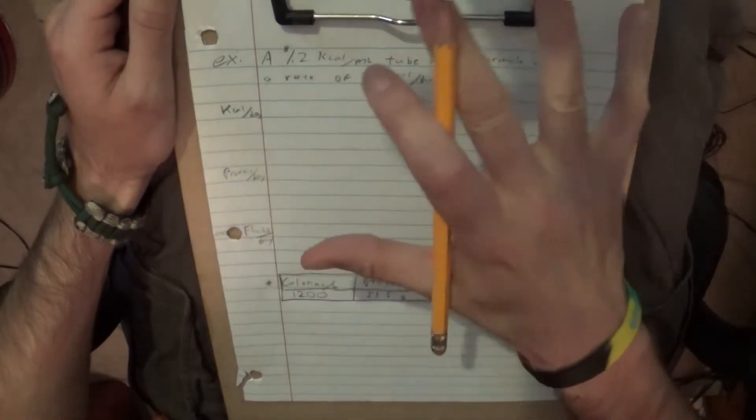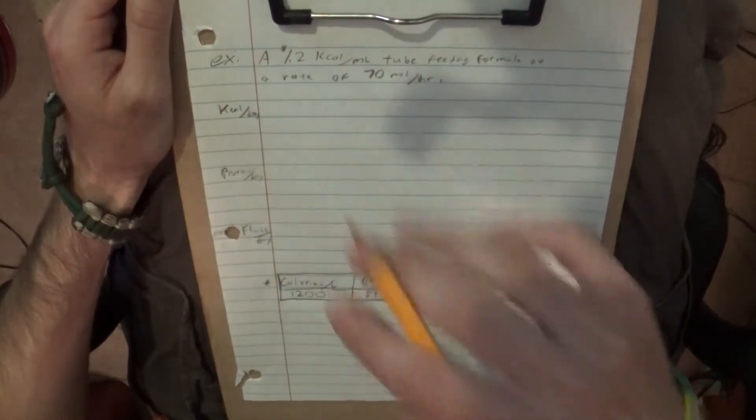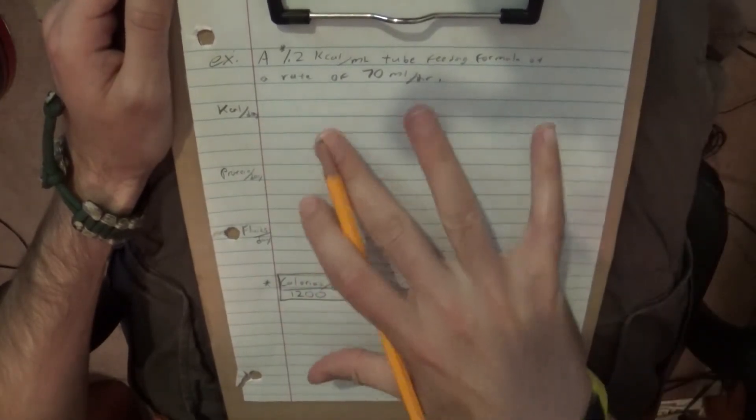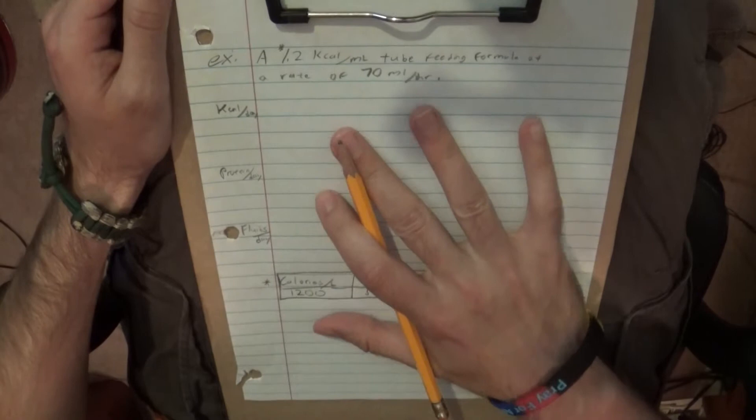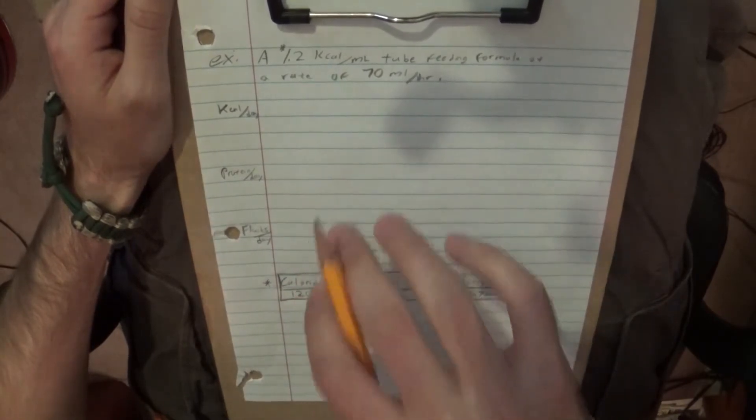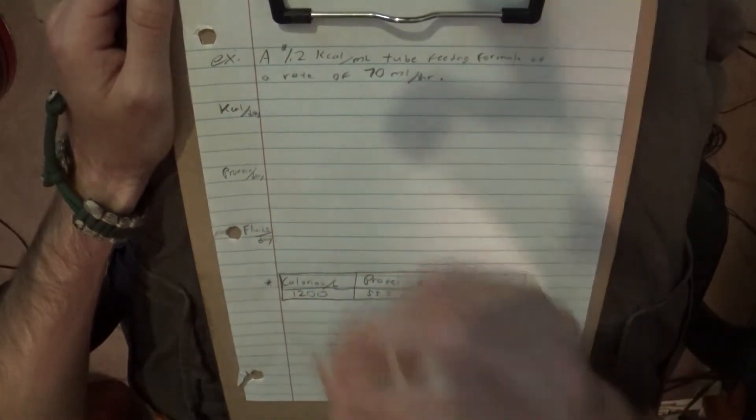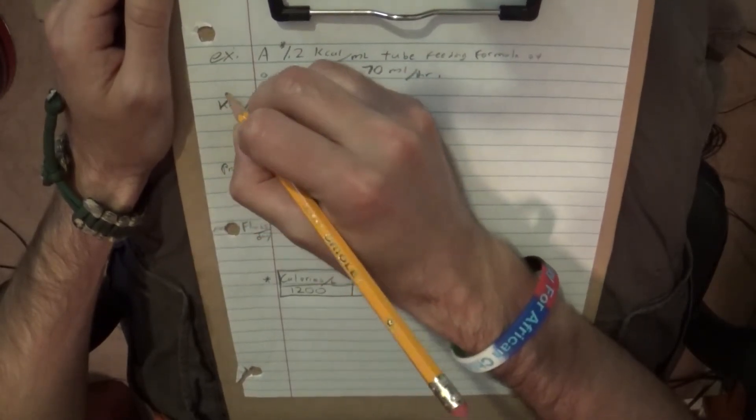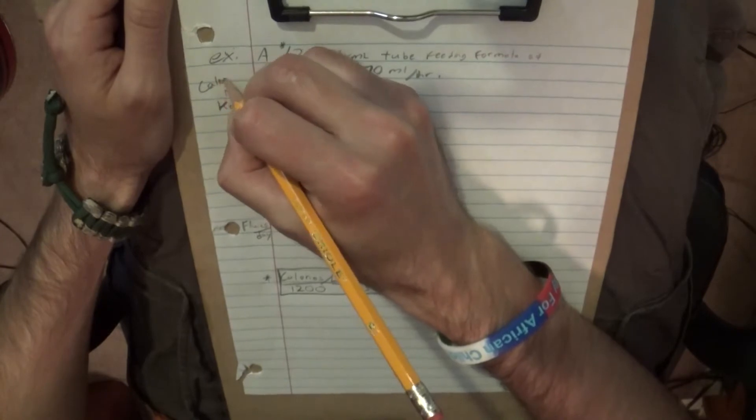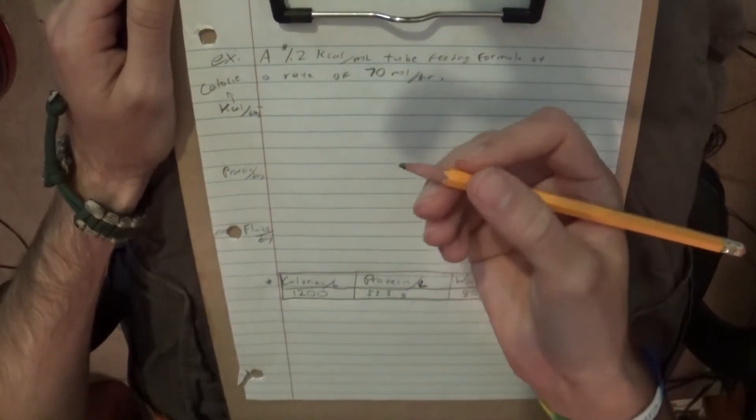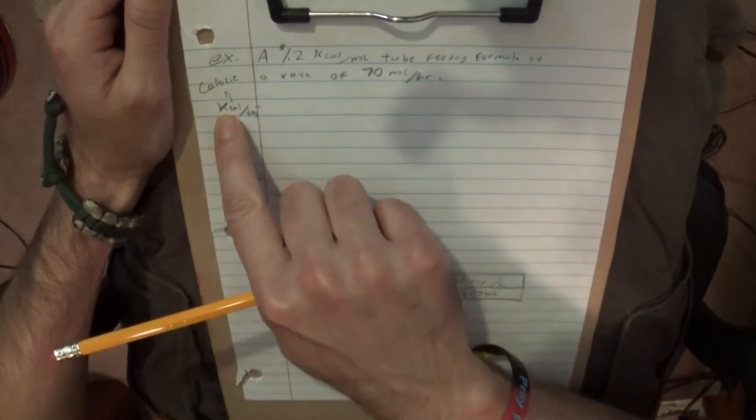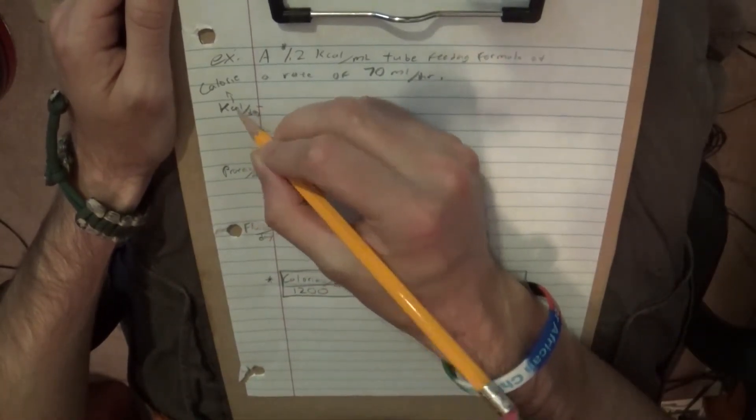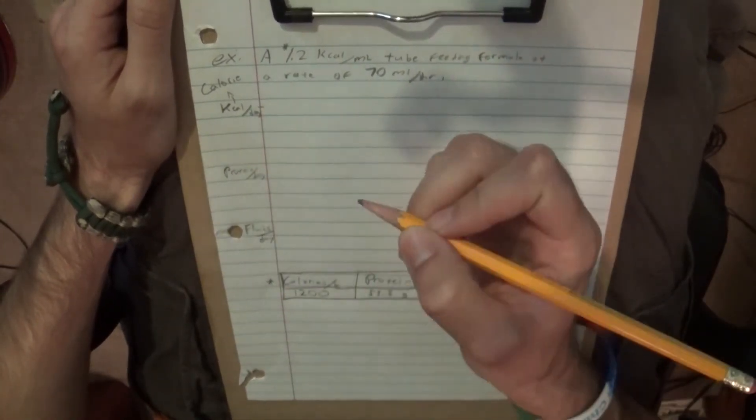Now, you don't really have to understand what this means to kind of get what we're about to do here. In fact, that's what's so good about this. You don't actually have to understand the math involved at all other than how I'm going to show it to you. What if we wanted to find how many calories? A kilocalorie, by the way, if you didn't know, is a calorie the way you understand it as one calorie in food. It's actually a kilocalorie. I'm going to call it a kilocalorie for the sake of this.